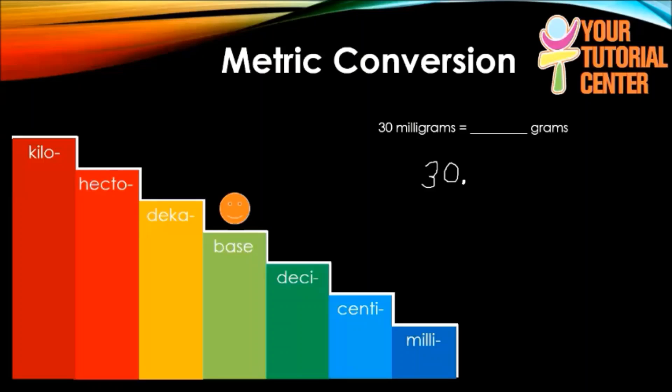We're using the same movement from milli to base, three places to the left: one, two, and then three. Our new decimal point should be located here, and for those spaces we put zeros. So 30 milligrams is equal to 0.03 or three hundredths of a gram. That's how we convert using the ladder method.